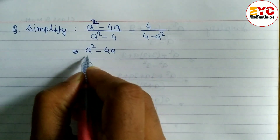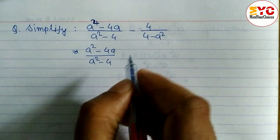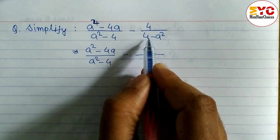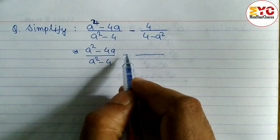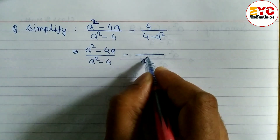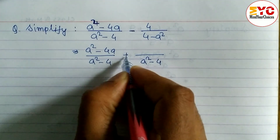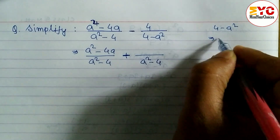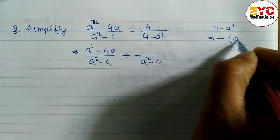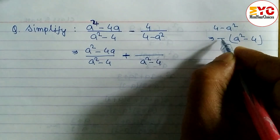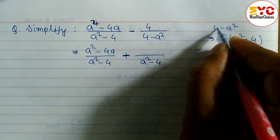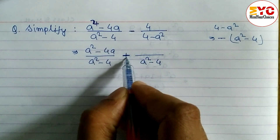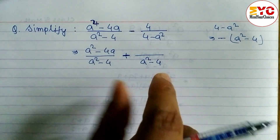One thing you have to note: when you take minus common from the second fraction, this minus will become plus and we can interchange the terms. So 4 minus a squared becomes a squared minus 4. Look here: minus into minus a squared is plus a squared, and minus into plus 4 is minus 4 — so we interchange and get a squared minus 4.